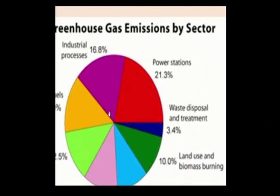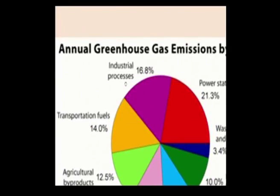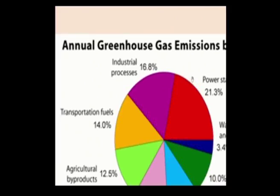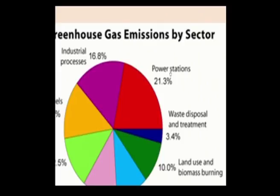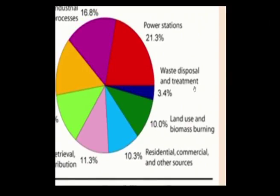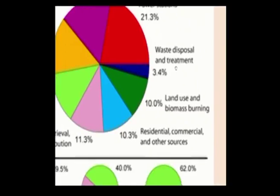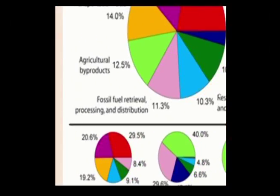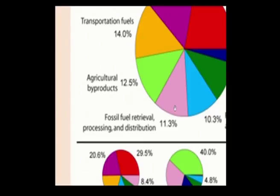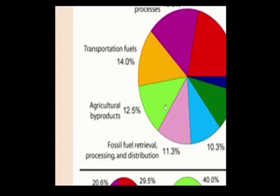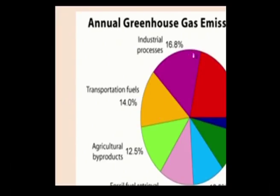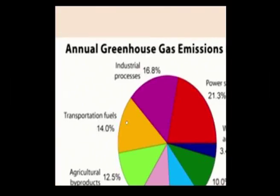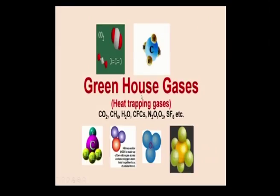Let us see the annual greenhouse gas emissions by various sectors. Industrial processes account for nearly 16.8%. Power stations account for 21.3%. Waste disposal and treatment — during which large amounts of methane and CO2 are emitted — accounts for 3.4%. Land use and biomass burning accounts for 10%. Residential, commercial, and other sources account for 10.3%. Fossil fuel retrieval, processing, and distribution accounts for 11.3%. Agricultural by-products account for 12.5%. Transportation fuels account for 14%.